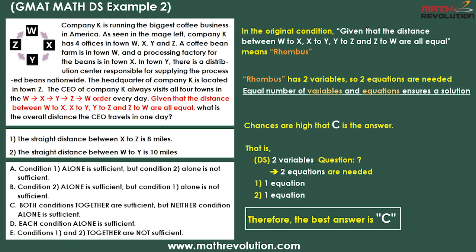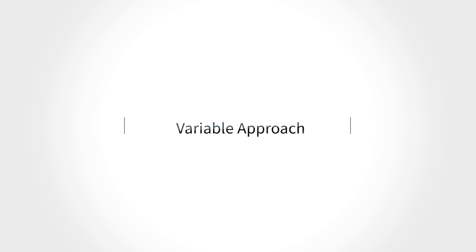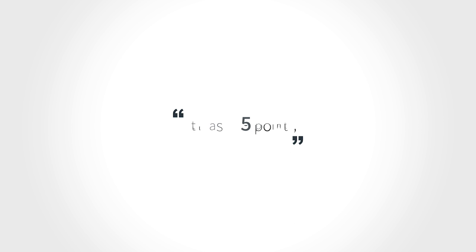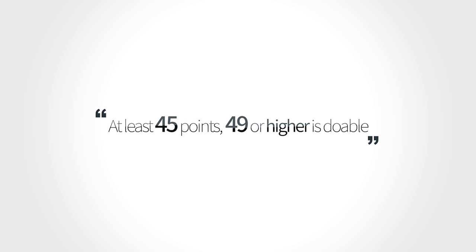So what do you think? Isn't this easy? With 15 years of experience, we have developed a unique and magical approach that will allow you to solve any GMAT math problem with ease, speed, and accuracy. Most of our students hit at least 45 points using the variable approach for solving GMAT math DS problems — at least 45 points. A majority of them even got 49 points or higher. And this can be you. Come and join us.